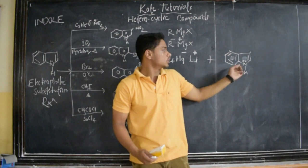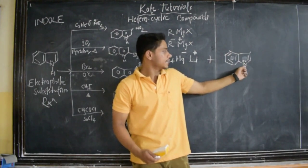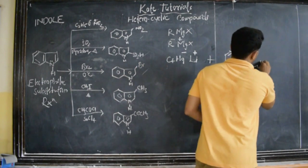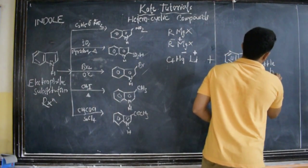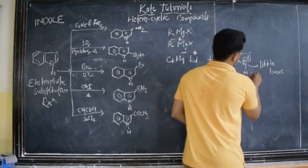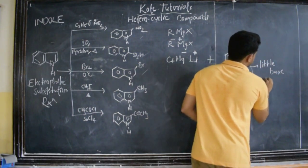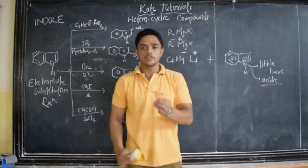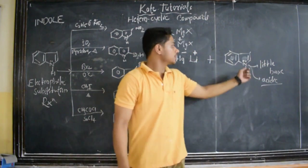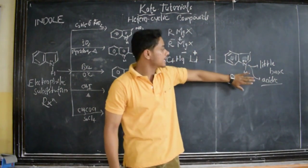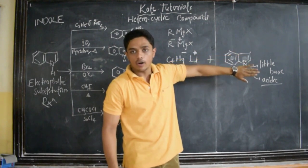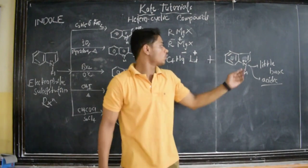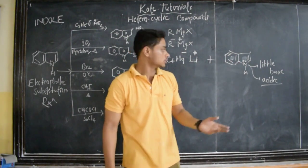So that it totally becomes 10 pi electrons. So this nitrogen is highly - I mean, little basic. It is very little basic.